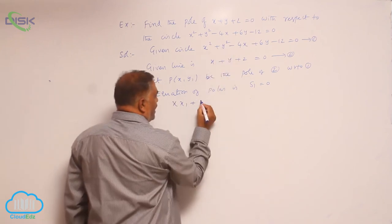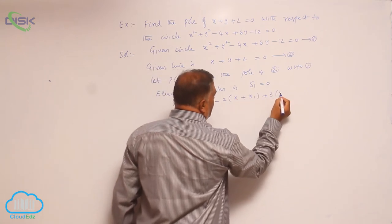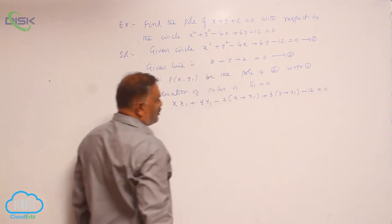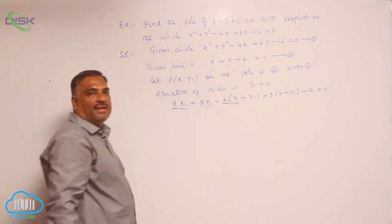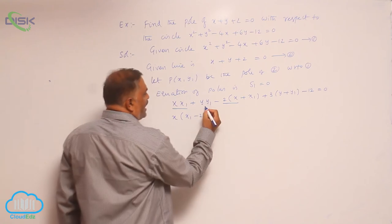You observe that in this term and this term, x is common, so x(x1 - 2). Again here and here, y is common, y(y1 + 3).